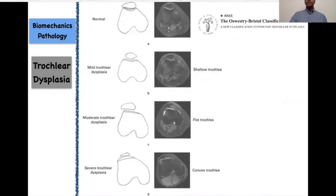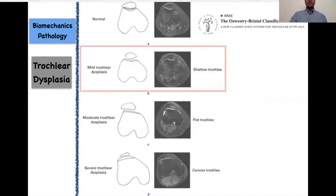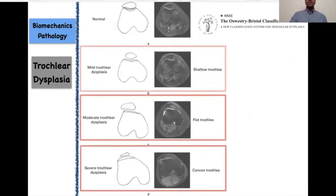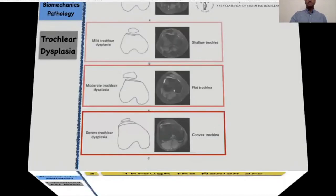Therefore, I think the new classification — presented last year and published this year in JBJS — the Oswestry Bristol classification, is really easy to understand and interpret. It is: mild trochlear dysplasia, which is shallow; moderate trochlear dysplasia, which is flat; and severe trochlear dysplasia, which is a convex trochlea.